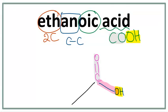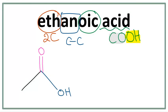So since we are drawing a line structure, we don't really need to write out this carbon here. So this is the line structure for ethanoic acid. Thank you for watching and don't forget to subscribe to my channel.